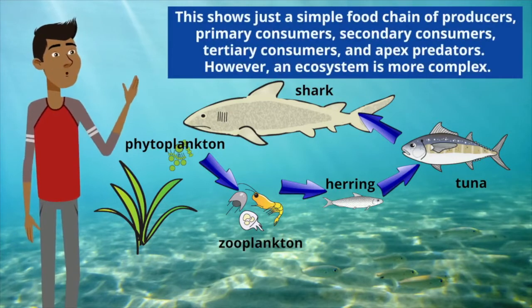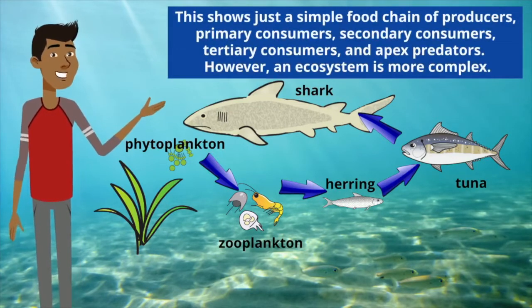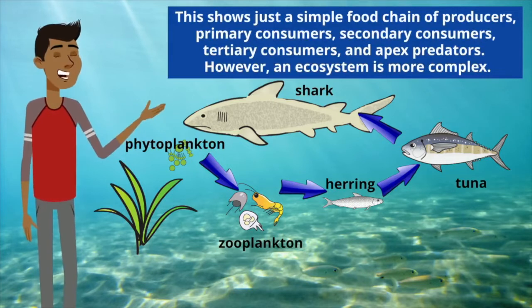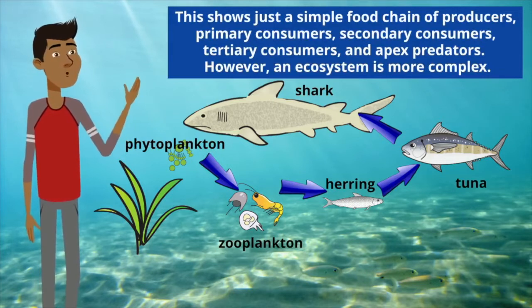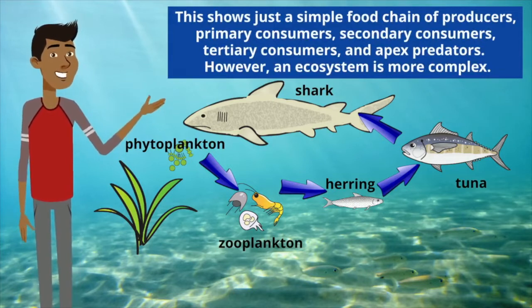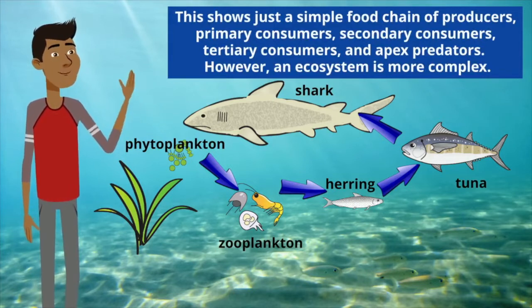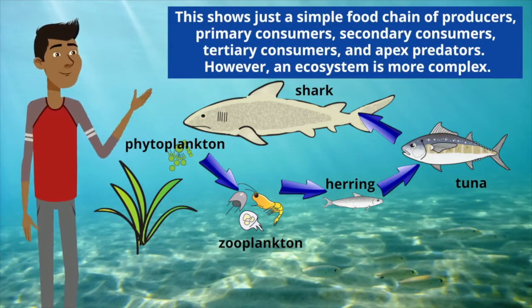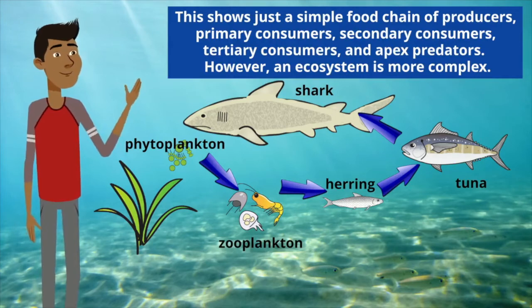This shows just a simple food chain of producers, primary consumers, secondary consumers, tertiary consumers, and apex predators. However, an ecosystem is more complex.